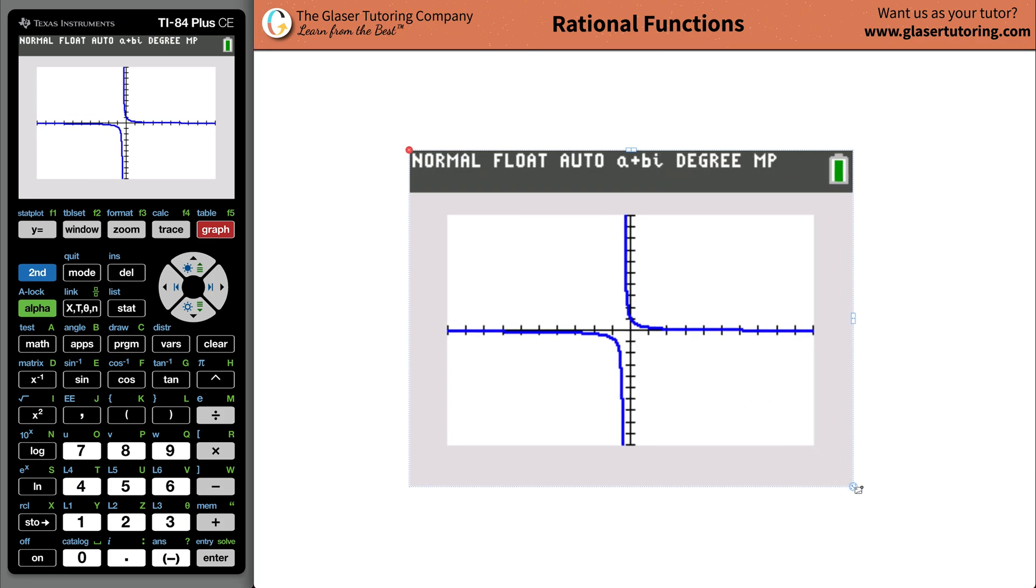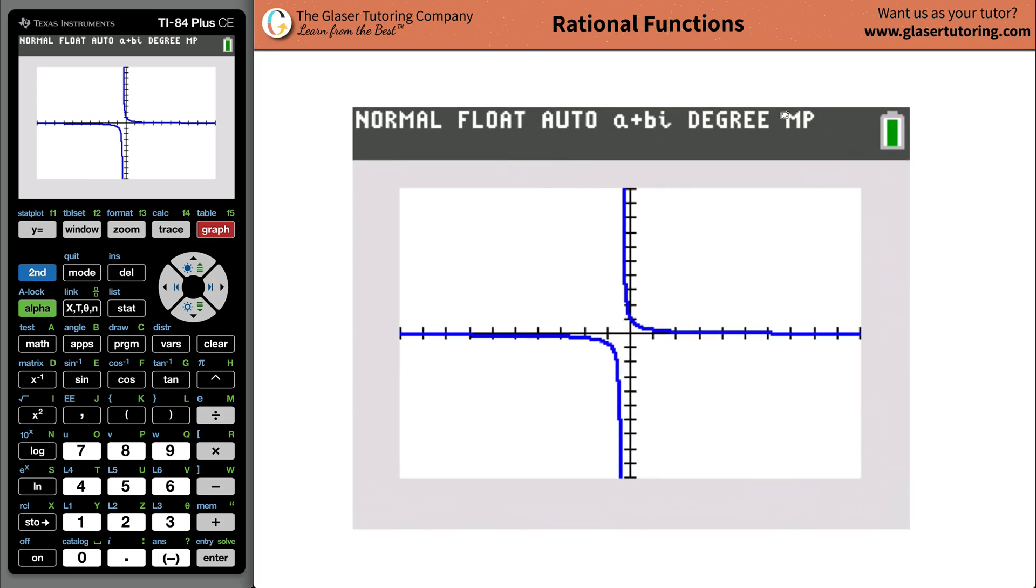So remember, we said that our horizontal asymptote was going to be at y equaling zero. And notice, there's a beautiful horizontal asymptote here right at y equals zero. We also said that there should be a vertical asymptote roughly around negative two-fifths, right? x equaling negative two-fifths. And doesn't that look like negative two-fifths? Yeah. And that's it. That's all it is.